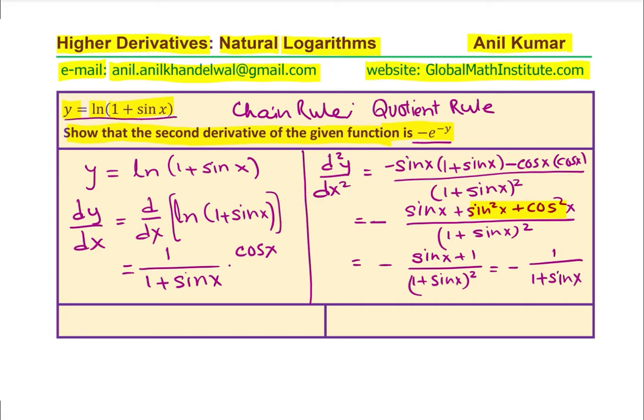So, we are given that y equals ln(1 + sin x). If you write this in exponential form, it will become e to the power of y is equal to 1 + sin x. So, clearly, in d²y/dx², 1 + sin x is in the denominator, right? We can substitute that by e to the power of y.